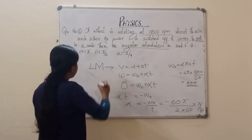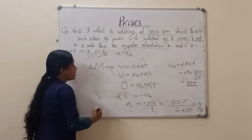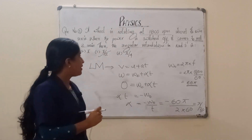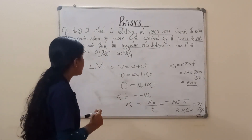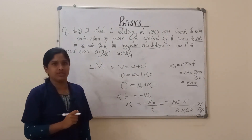So option C is correct. That is, the angular retardation in radians per second is π/2.